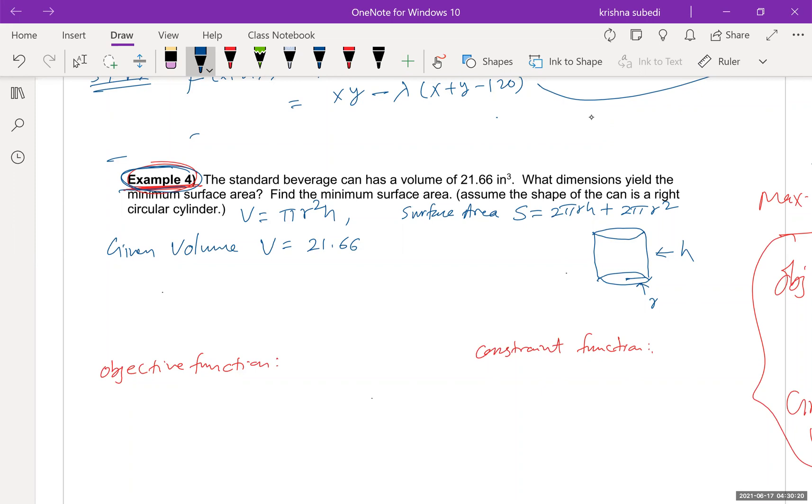The question is: the standard beverage can has a volume of 21.66 inch cube. What dimensions give the minimum surface area and find the minimum surface area. Assume the shape of the can is a right circular cylinder.